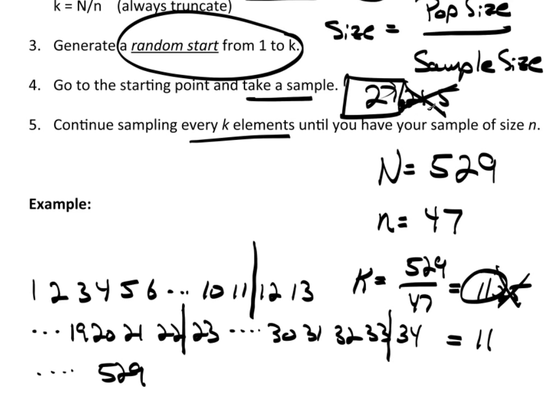Because we truncated here, this last group could have like 12 or 13 or something. It depends on what the actual values are. This last group could be slightly bigger. But the reason we truncated is, let's just pretend that this came out to rather than 11.25, this is 11.71. And you rounded up and went to 12. Well, the problem is, when you multiply 47 by 12, it's more than 529.